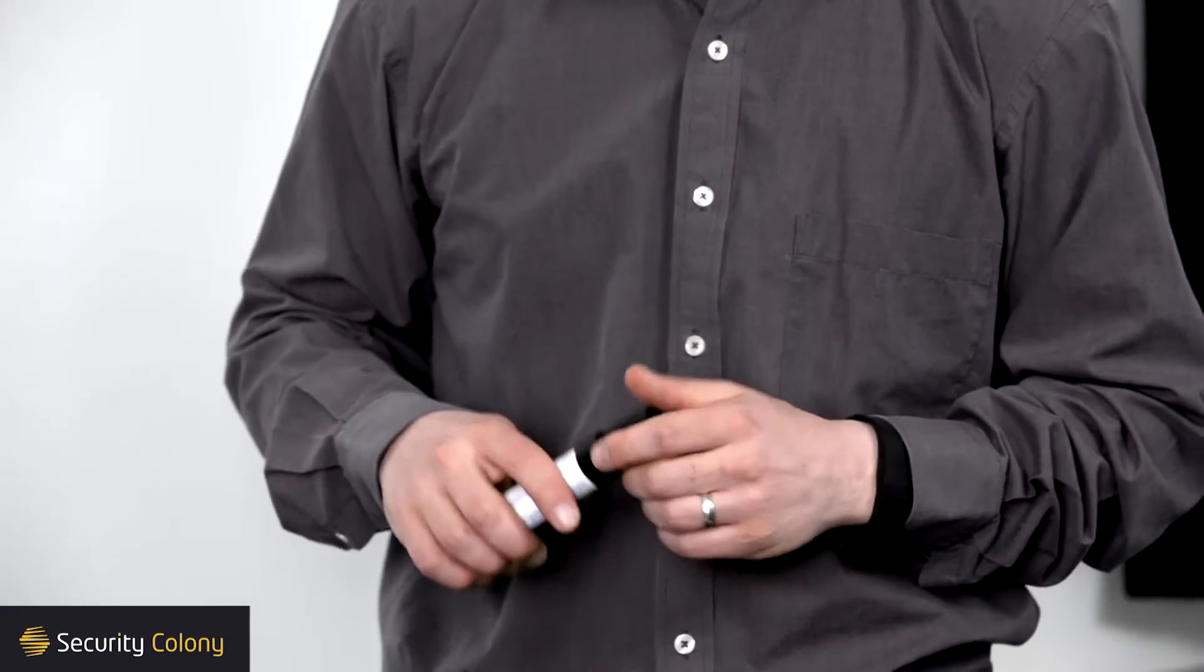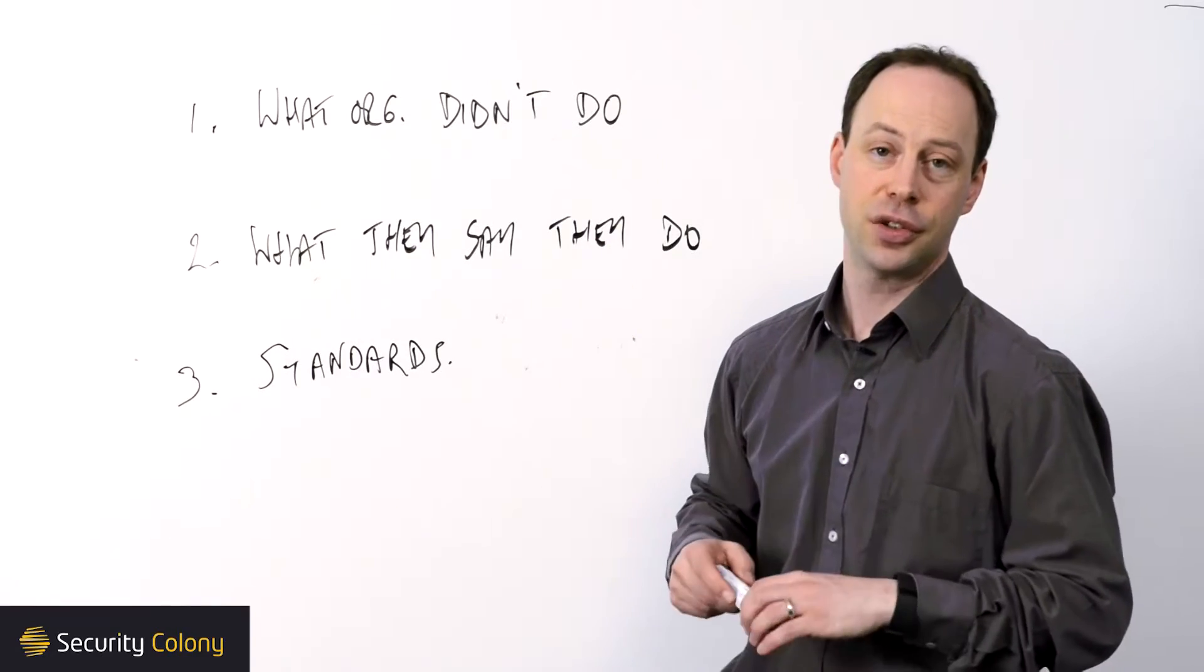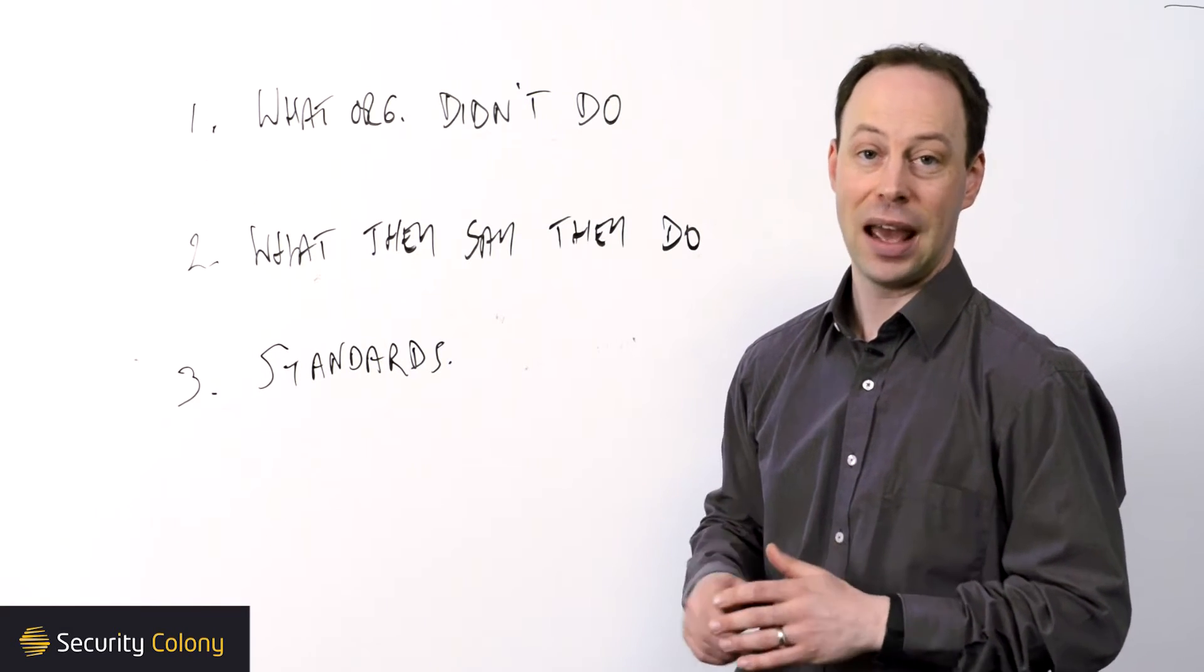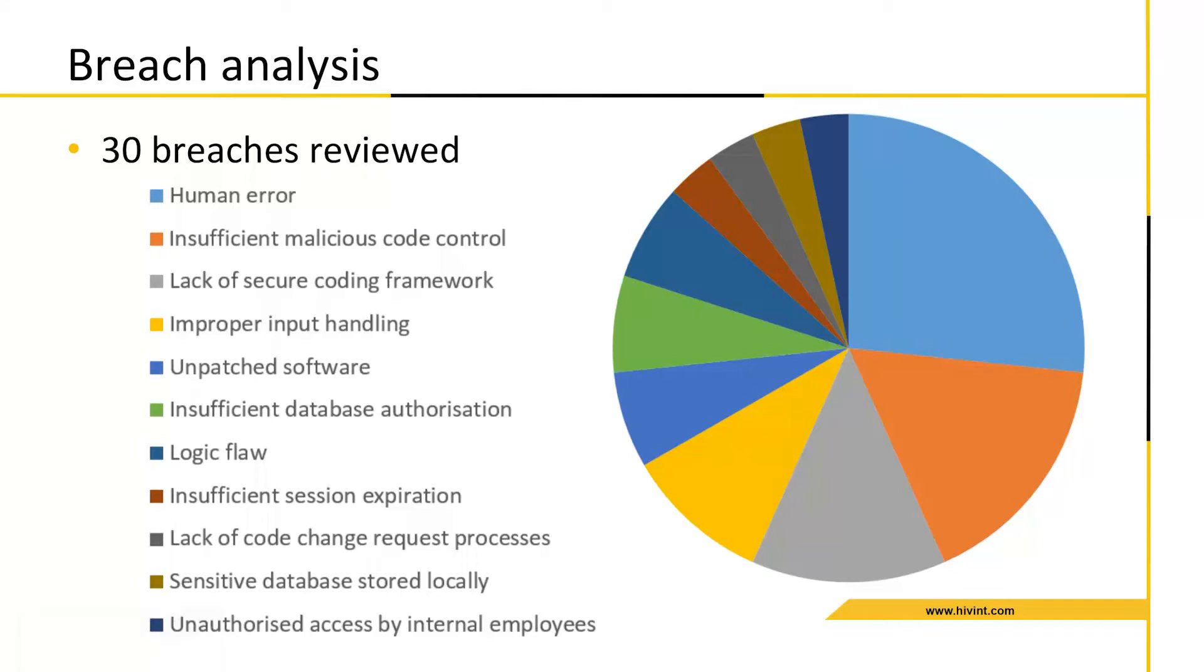Next, I'd like to quickly run through some of the findings from our research for each of these three areas. The first is what organizations didn't do and the compromises that they experienced. As you'll see from the slide on the screen at the moment, when we look at 30 breaches, primarily of Australian organizations since 2015, the key areas that organizations failed in were human error, insufficient malicious code control, insufficient secure coding, improper error handling, and unpatched software, which are all reasonably common weaknesses that we find in a lot of organizations.